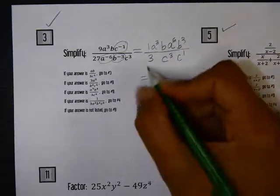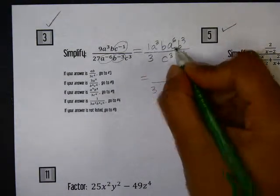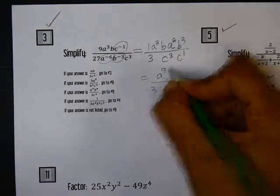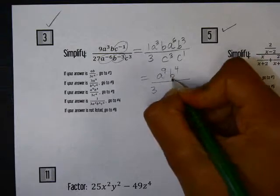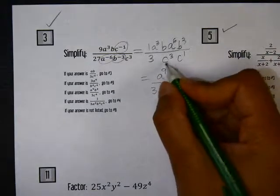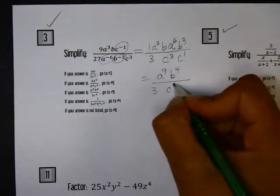Now if we completely simplify this, we have A cubed times A to the 6th, which is A to the 9th. B times B cubed, which is B to the 4th. And then in the denominator, we have C cubed times C to the 1st, which is C to the 4th.